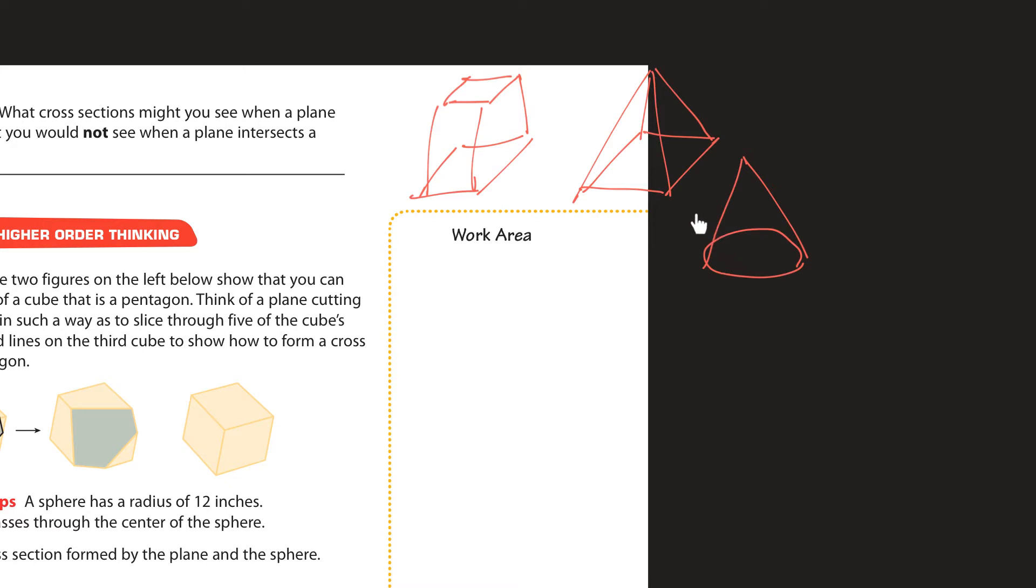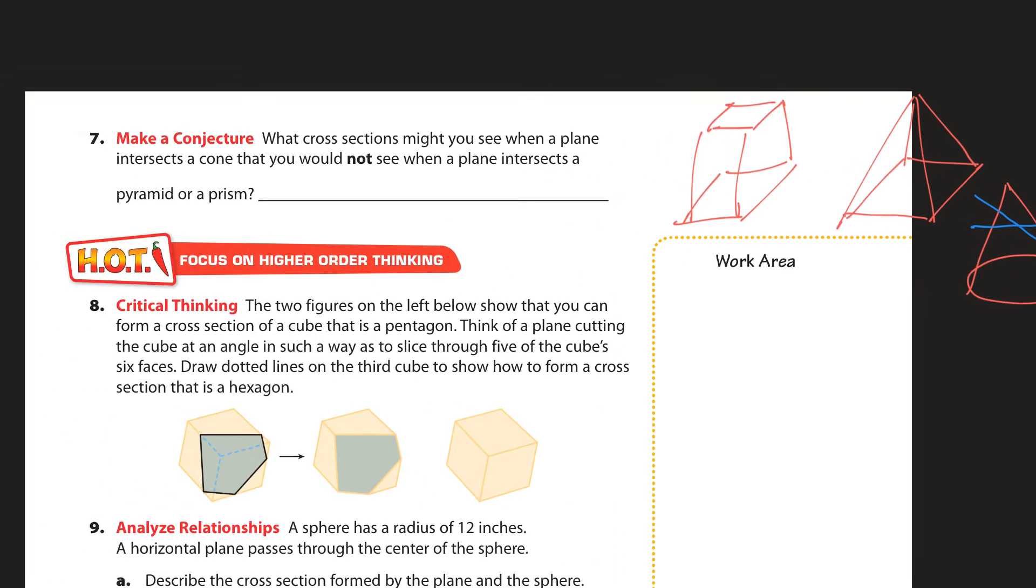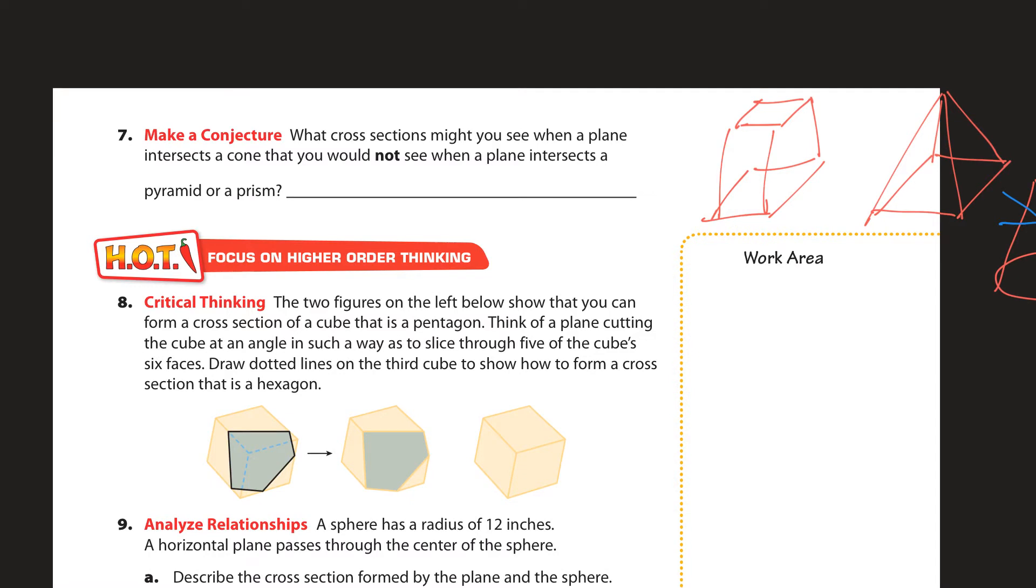So they're asking what cross sections would you see in this one that you would not see in these? Well, we see the rounded edges. And so we can cut it straight across and see a circle or we could see a triangle, but we can see triangles on this one too. We could go straight across for which we would see a circle if we cut it this way. And if we cut it slanted, once again, we'd see that oval that we saw before. So we can make circles and ovals.